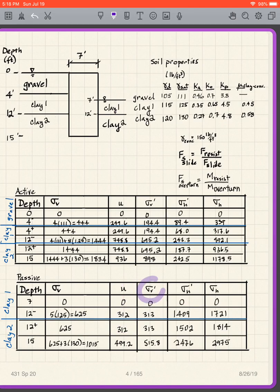And then what do I know? Sigma V prime is sigma V minus U. Sigma H prime is going to be with the KPs. I only have clay one and clay two, so I use 4.5 times 313 to give me that number. Then I'm in the clay two now. So this is 4.8 times the 313. And then 4.8 times 515.8 gives me that. So I get my sigma H prime. Then I go sigma H prime plus U gives me sigma H. That gives me all those numbers.